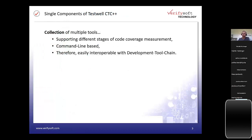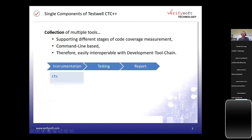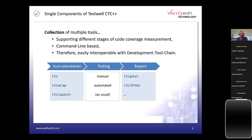To understand how CTC++ works, there are three steps: instrumentation, testing, and reporting. CTC++ is not a single product but a collection of well-established command-line tools that work together. In step one, we instrument your source code. Step two is the testing itself — a strength of our tool is that it works independent of the way you test, whether unit tests or integration testing. At the end, you can combine the results of all measurements into a single combined report. Step three is reporting, with tools to output XML, HTML, or text reports.